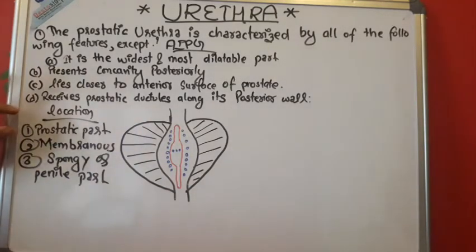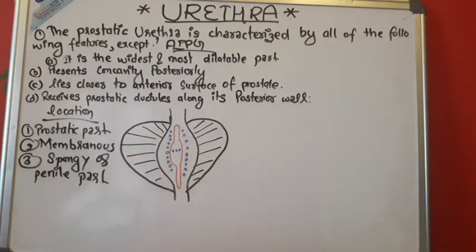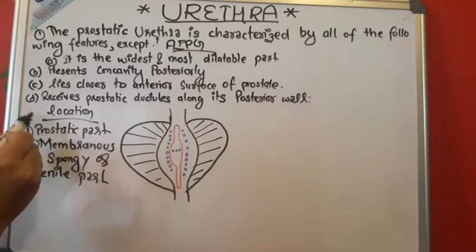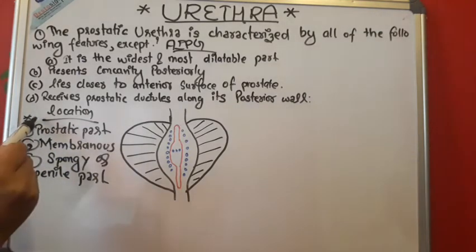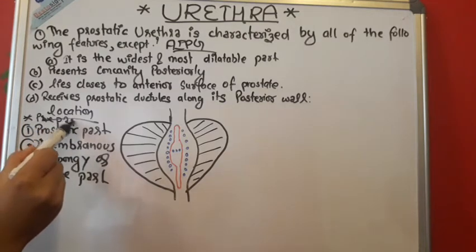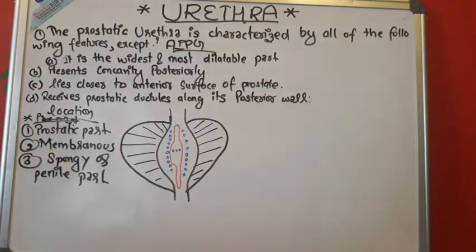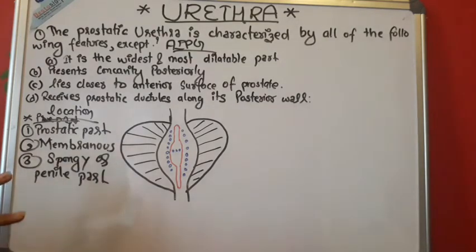As you can see in this diagram, the urethra is divided into prostatic, membranous, and spongy parts based on location. Some books mention a pre-prostatic part, but most standard books divide it into three parts, so we will study three.